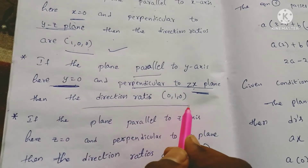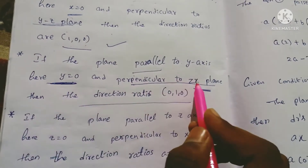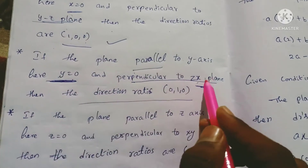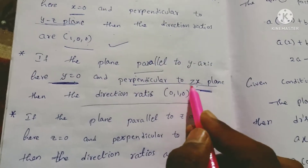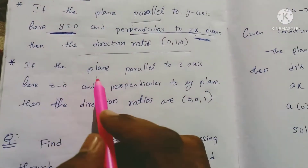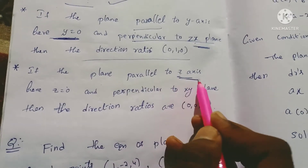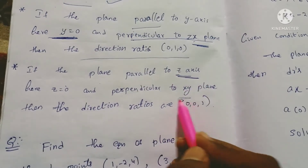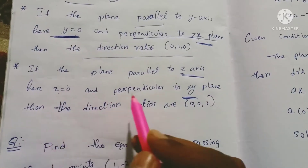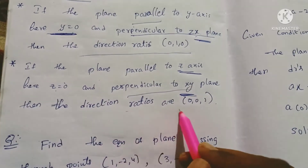You can see here on the plane — this is y equals 0, so here is the x-z plane. If the plane is parallel to the z-axis, then z is equal to 0, and perpendicular to the x-y plane. The direction ratios are 0, 0, 1.